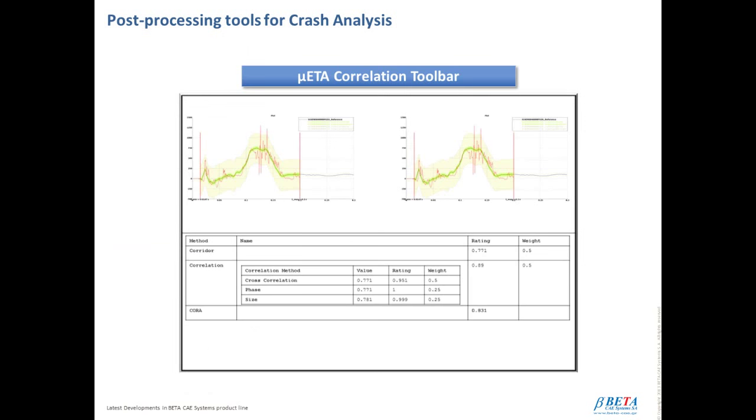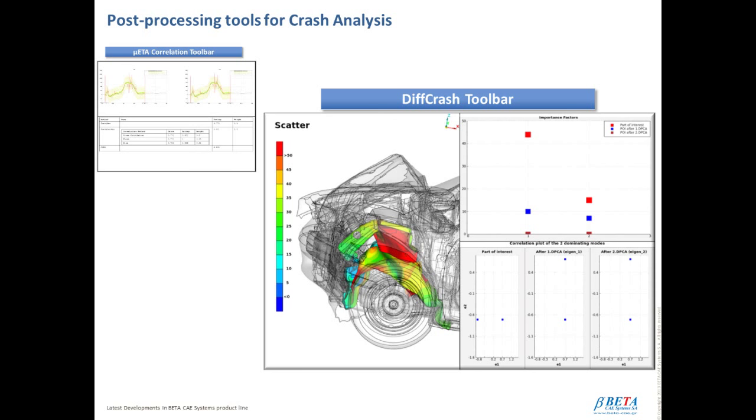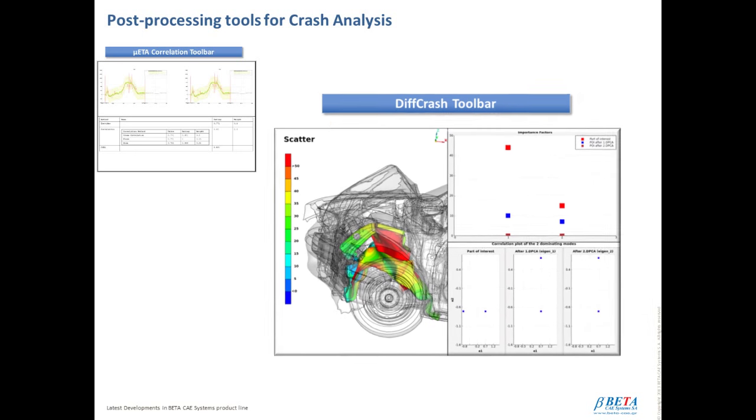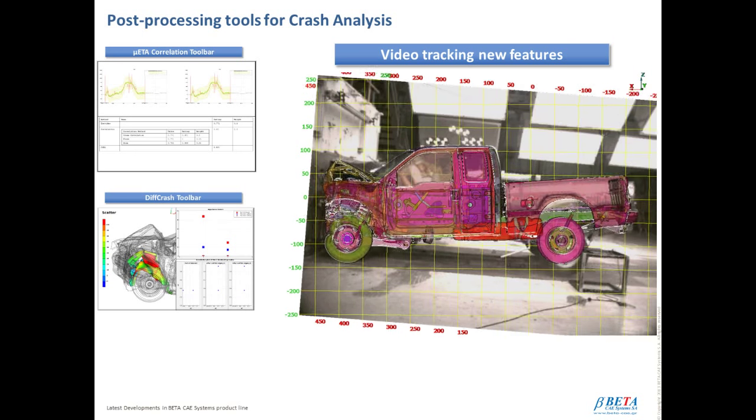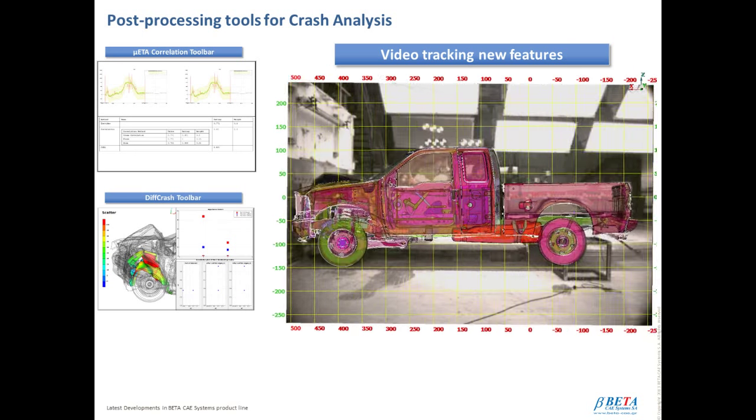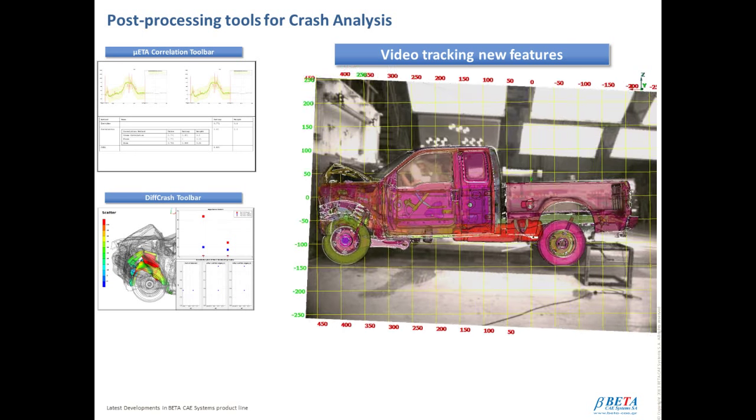More tools of META post-processor in the crash analysis field. The META correlation toolbar, which is the core respective tool for crash and not only results correlation based on the weighting factor. The D-CRASH toolbar, in order to analyze scatter of crash simulation results within META. And last but not least, video tracking new features for 2D grid definition, coordinate system definition, manual tracking step-by-step, as well as prediction when losing track.